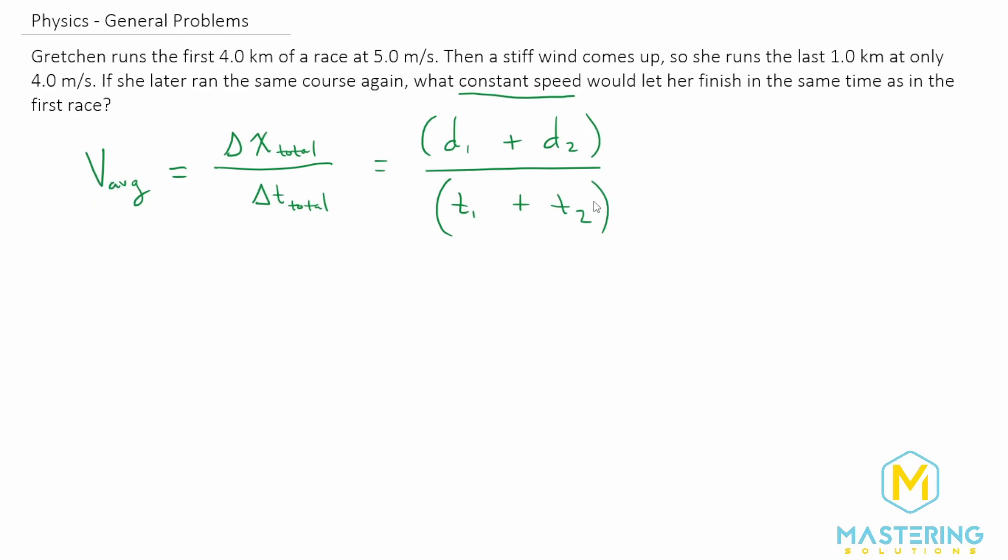So now let's solve for these times over here. If we rewrite the equation that we just talked about, velocity is d over t, or delta x over t, we need to solve for time. So if we multiply both sides of the equation by time, I'm going to combine this all into one step, we'll divide by velocity. So now if we rewrite that, time is equal to distance over velocity.